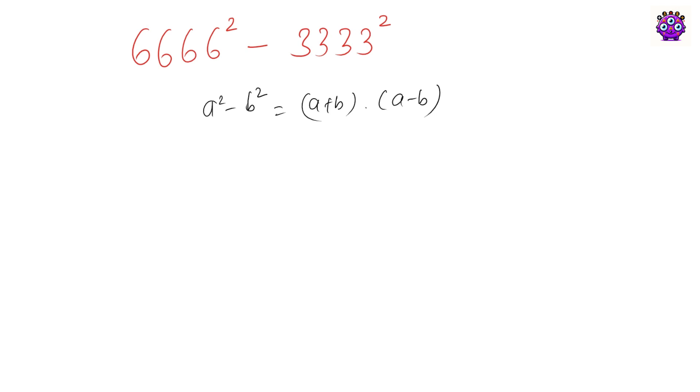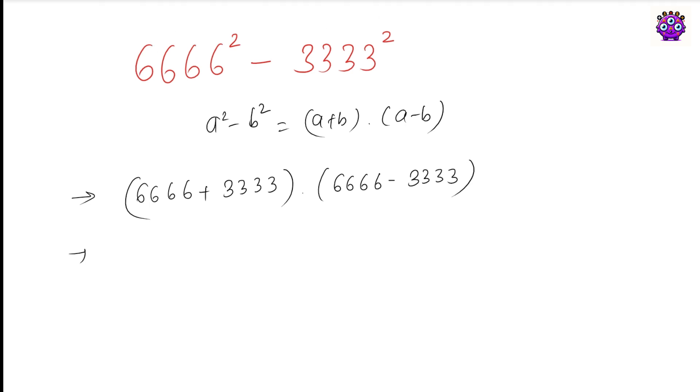Here a equals 6666 and b equals 3333, so it becomes (6666 + 3333) times (6666 - 3333). If you add 6666 plus 3333, it becomes 9999.